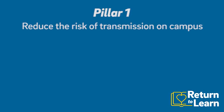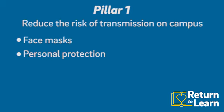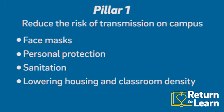The first pillar is reducing the risk of transmission on campus through personal protection, sanitation, as well as structural configuration of campus in terms of housing and classroom density, to really reduce the risk of transmission on campus if an infection occurs.